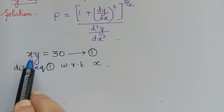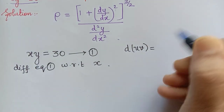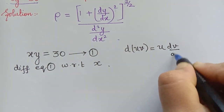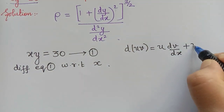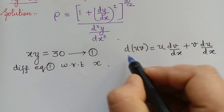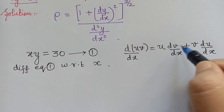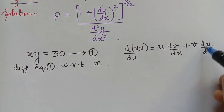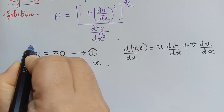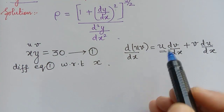When differentiating, we use the UV product rule: d/dx(uv) = u · (dv/dx) + v · (du/dx). That is, keep the first function as it is and differentiate the second, plus keep the second as it is and differentiate the first. Here, u = x and v = y.